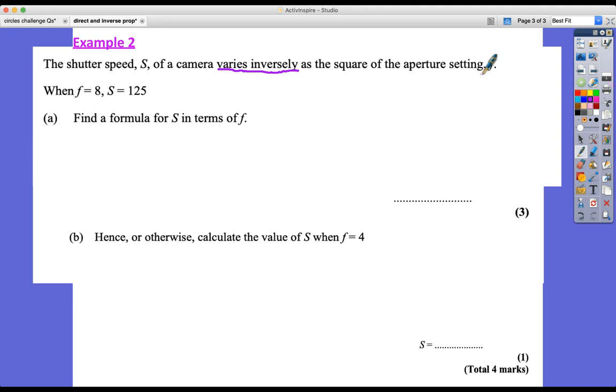And it's not a straightforward one because it's the square of the aperture setting f. So it says the shutter speed s of a camera varies inversely as the square of the aperture setting f. So when f equals 8, s equals 125. Find a formula for s in terms of f.